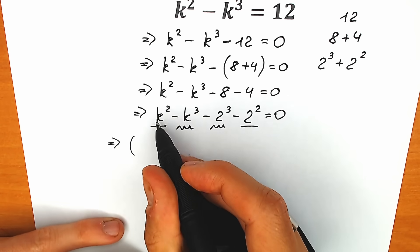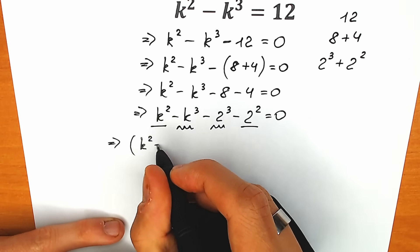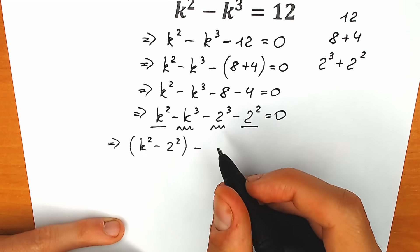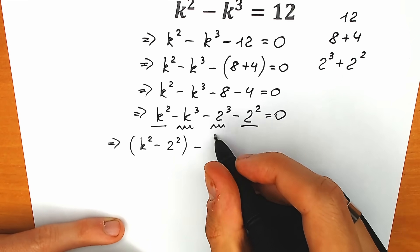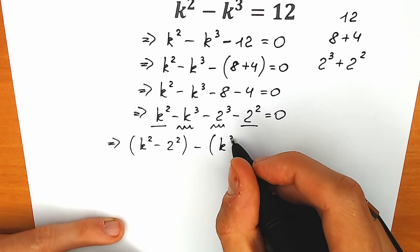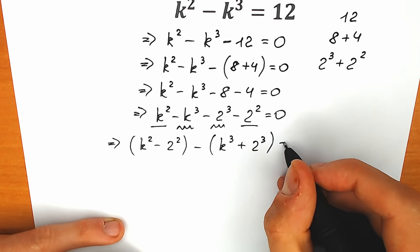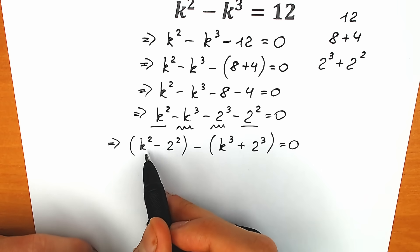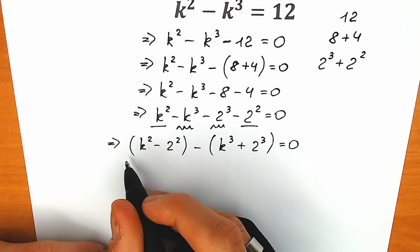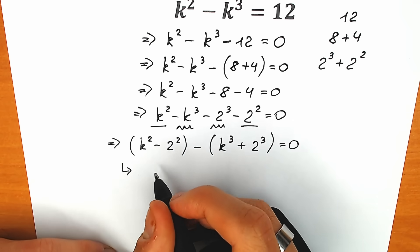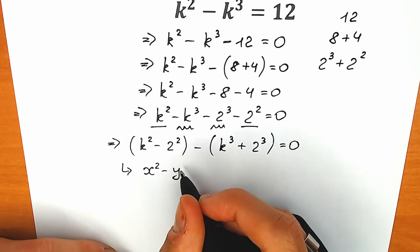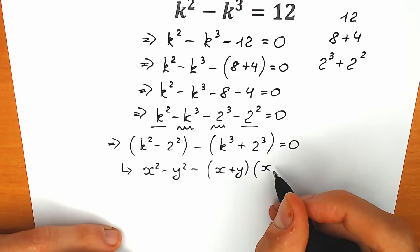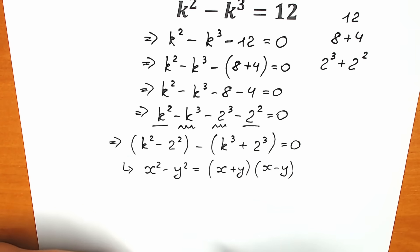First I want to group squares: k-squared minus 2-squared. Second, let's group the cubes: minus k-cubed plus 2-cubed, equal to zero. We have an expression we can call the difference of squares, and we need to know the formula. So x-squared minus y-squared equals (x plus y) times (x minus y). We're going to apply this formula to the first parenthesis.